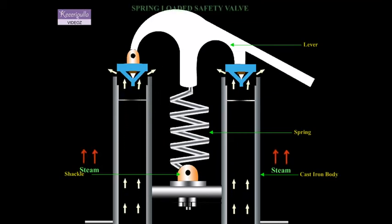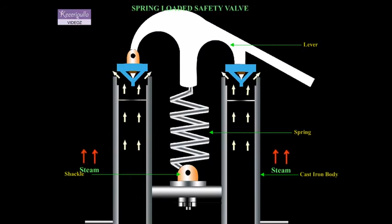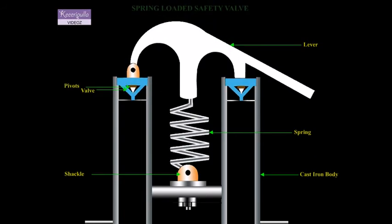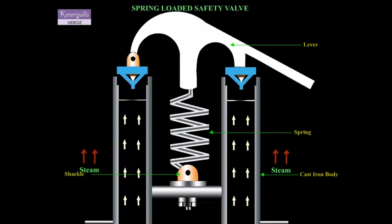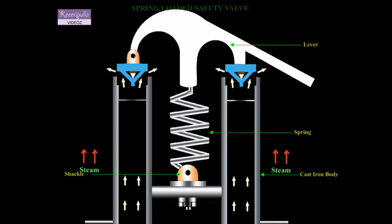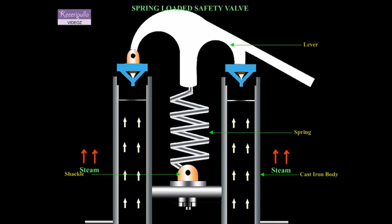The spring-loaded safety valve is actuated when the steam pressure exceeds the safe working pressure. The valves rise up against the action of the spring due to the excess pressure of the steam inside the boiler, and allow the steam to escape from inside the boiler, till the pressure in the boiler drops to the safe working pressure.